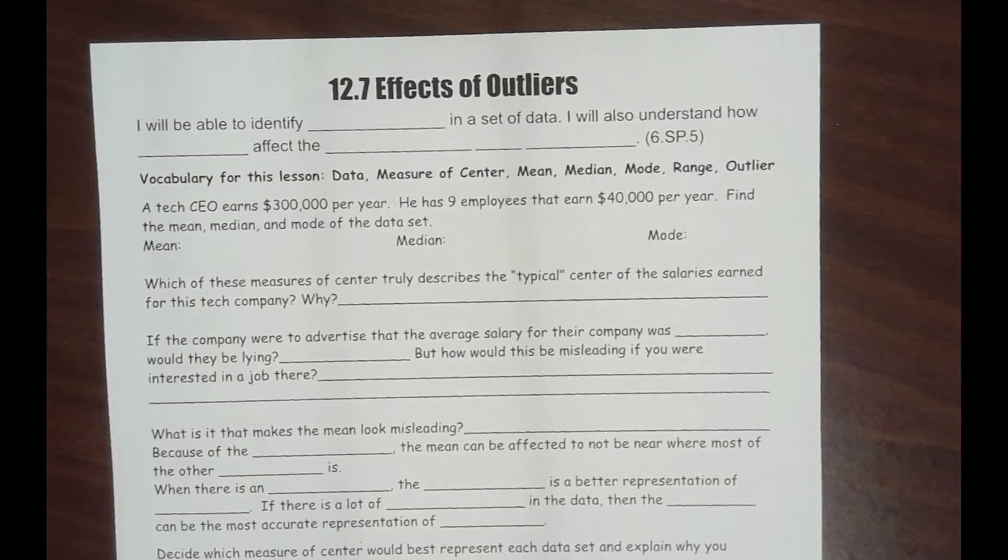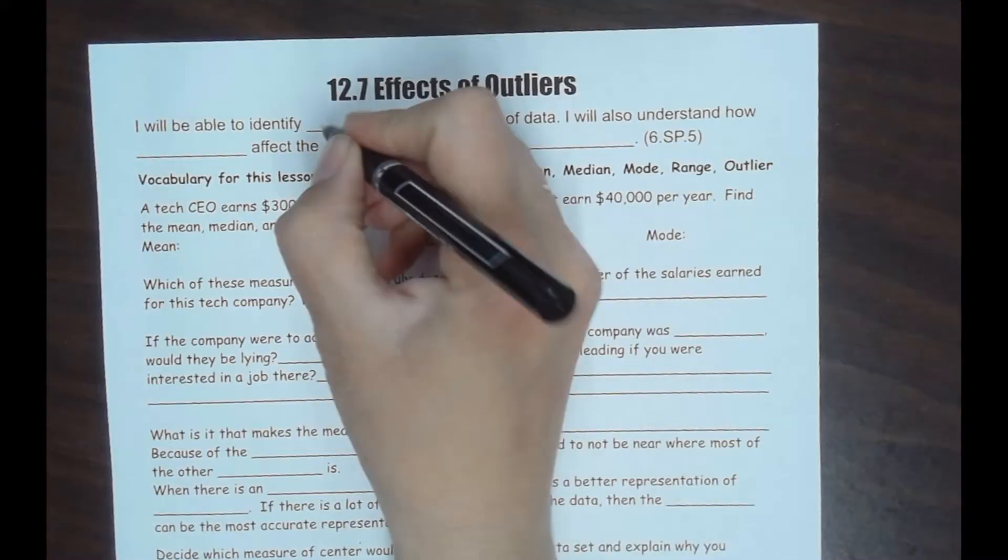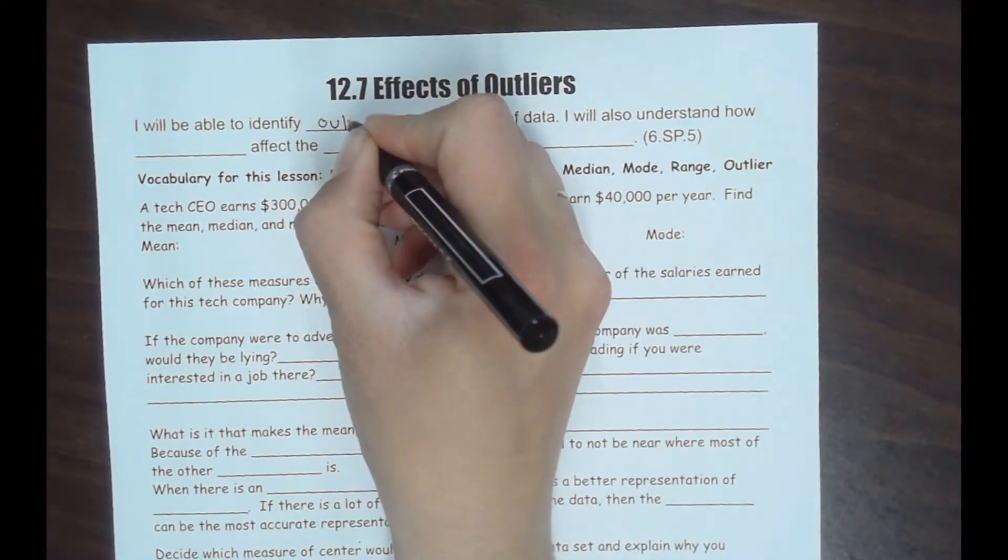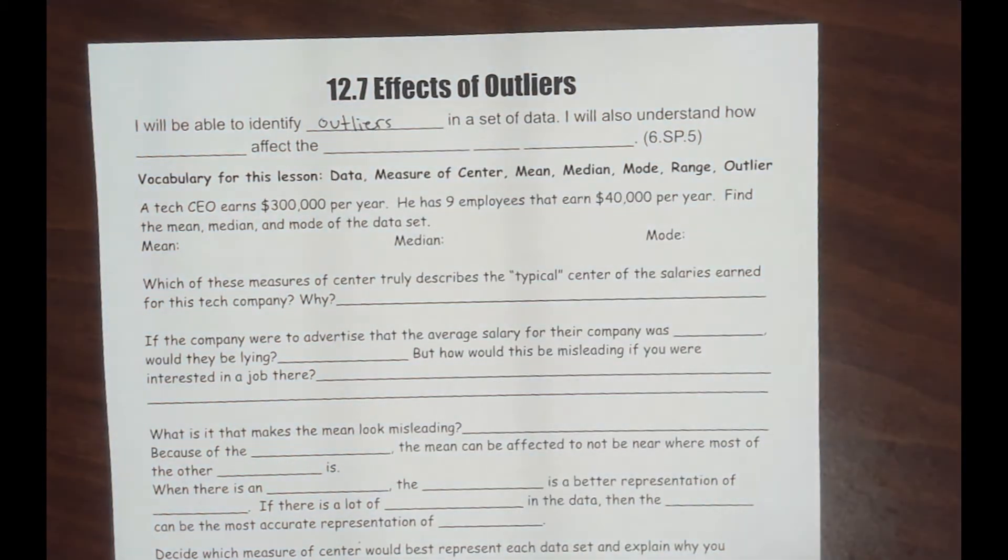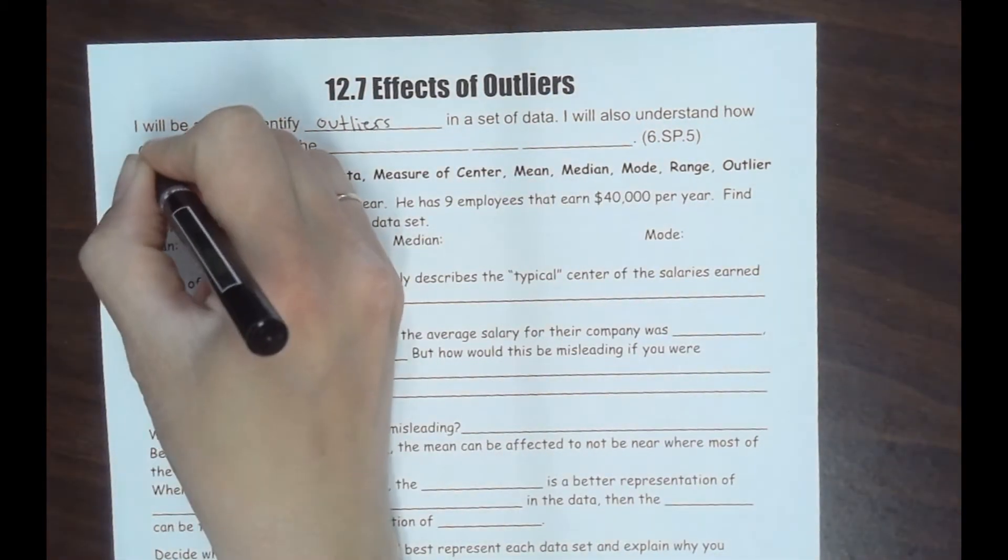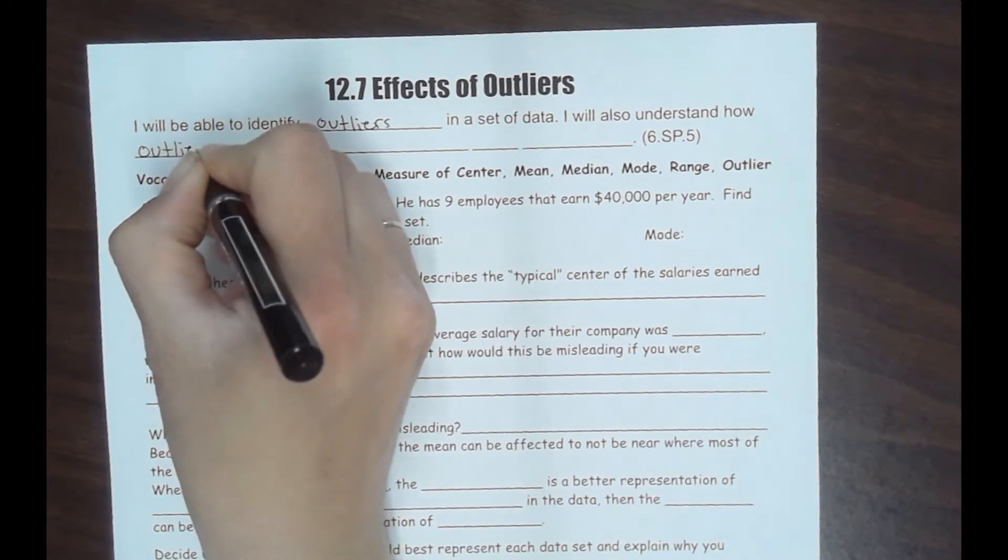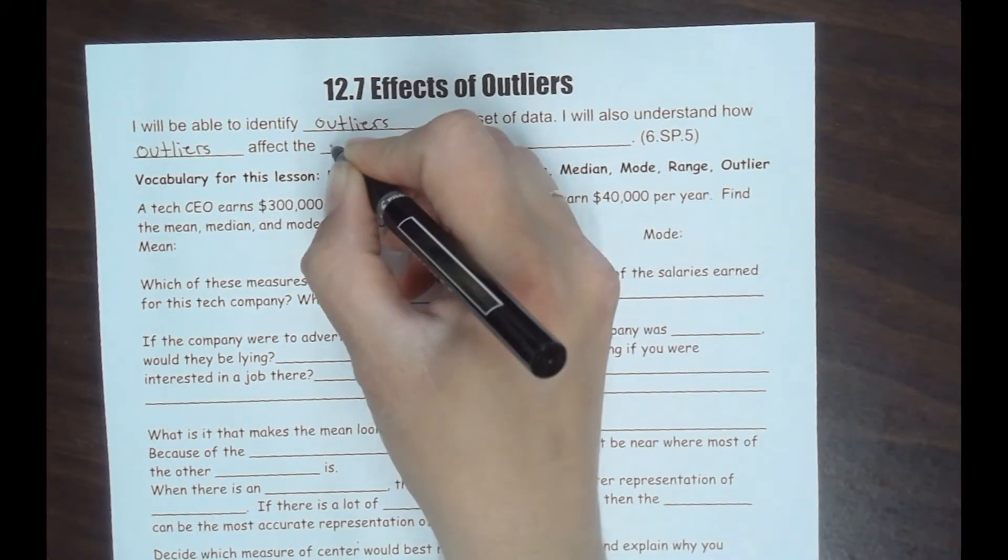Welcome back. This is lesson 12.7, Effects of Outliers. I will be able to identify outliers in a data set. I will also understand how outliers affect the measures of center.